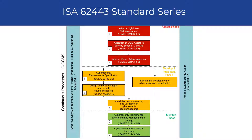The ISA 62443 Standard Series provides a comprehensive framework for managing and improving cybersecurity throughout the lifecycle of IACS systems. It provides guidance on risk assessment, security policies and procedures, network segmentation, access controls, security patch management, secure software development, and more. It emphasizes a defense-in-depth approach to cybersecurity and encourages collaboration between IT and OT teams within organizations.